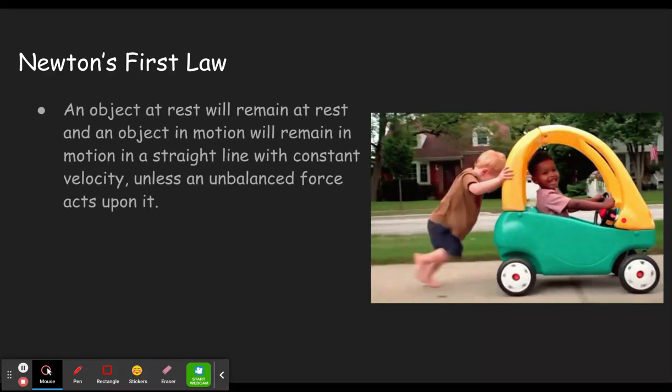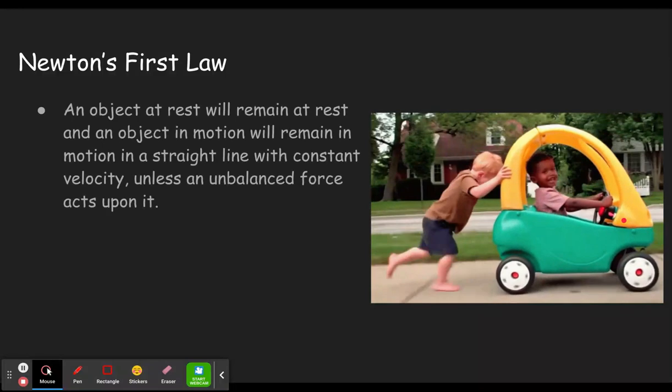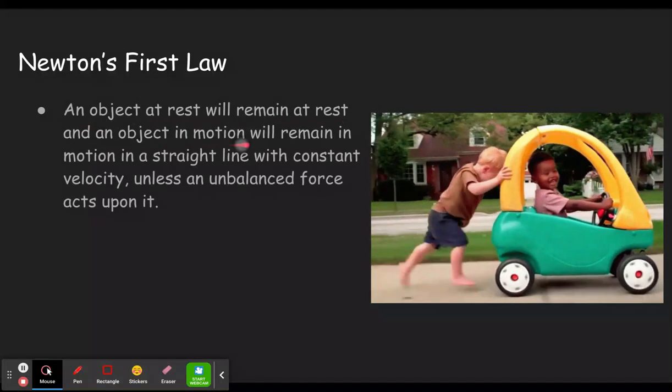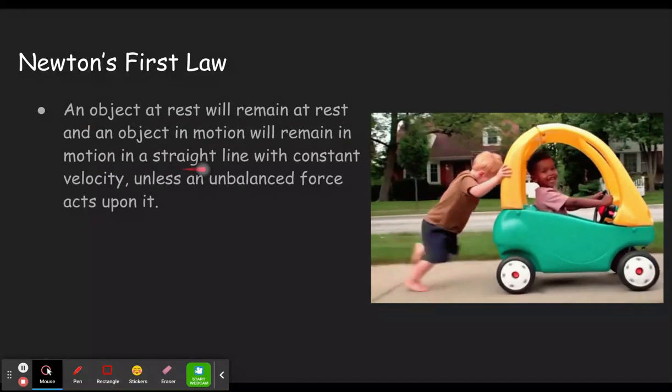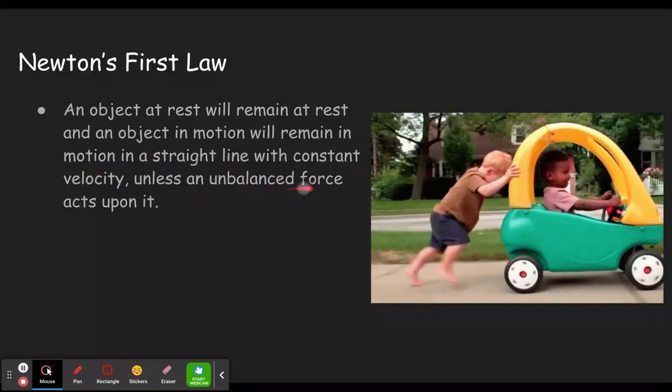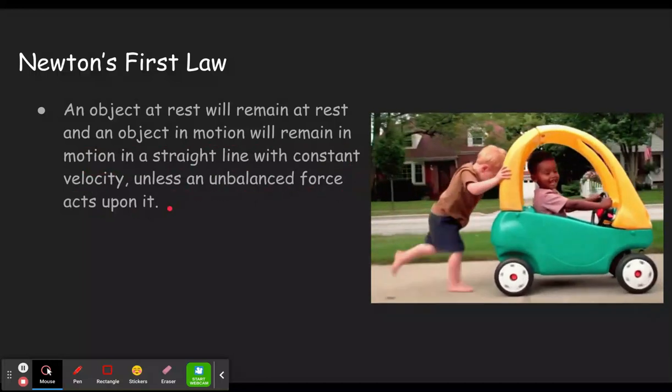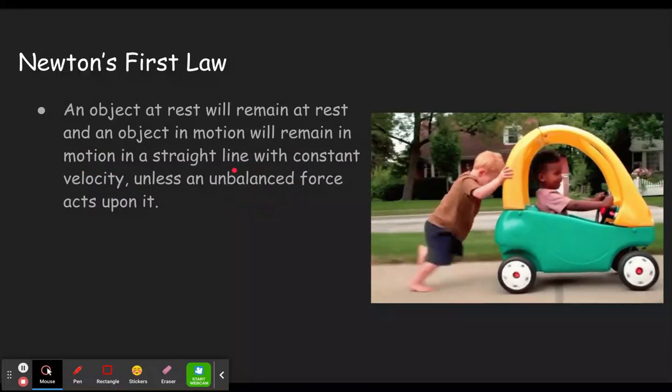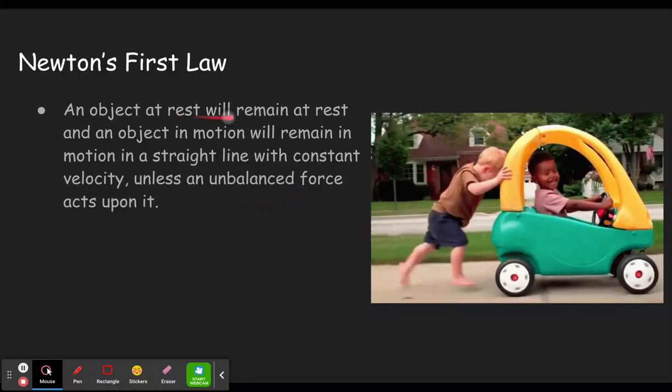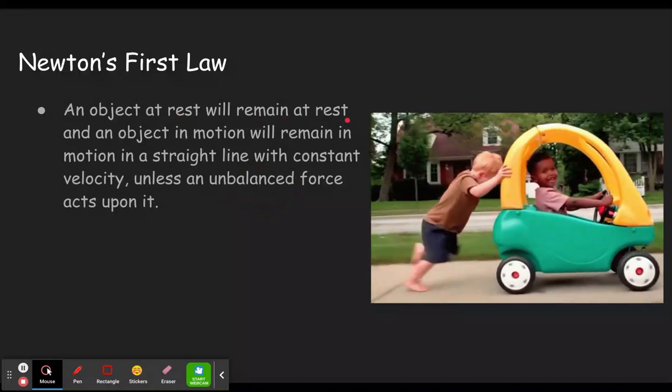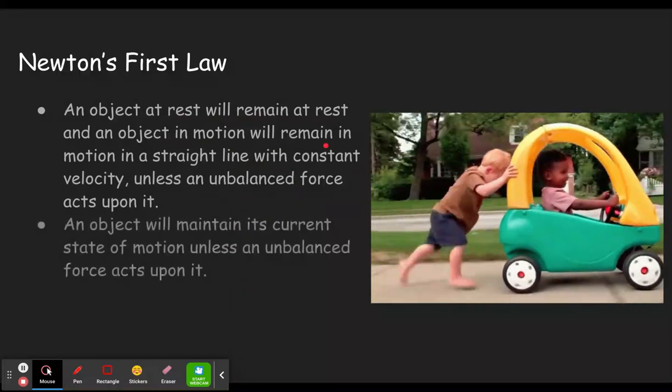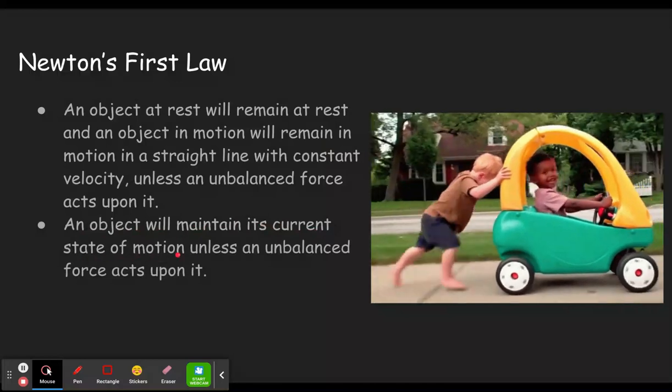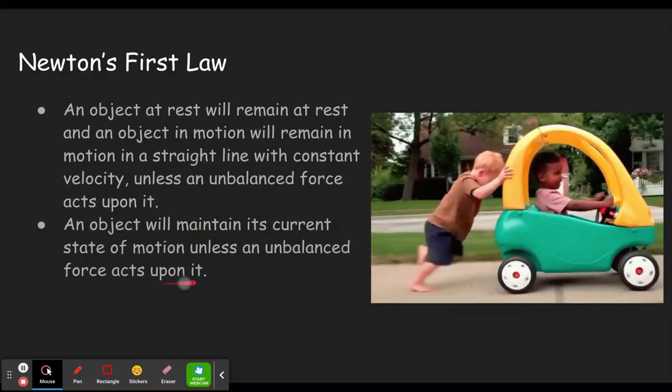We're basically looking at Newton's first law, so let's go through a few different ways that you may see your physics teacher defining this. First, we see the one that was closest to kind of word for word what Isaac Newton would have written. An object at rest will remain at rest, and an object in motion will remain in motion in a straight line with constant velocity, unless an unbalanced force acts upon it.